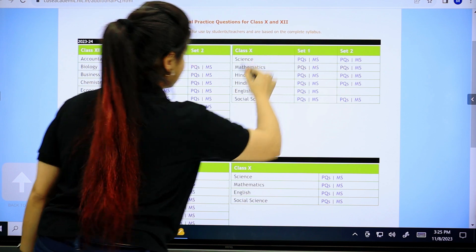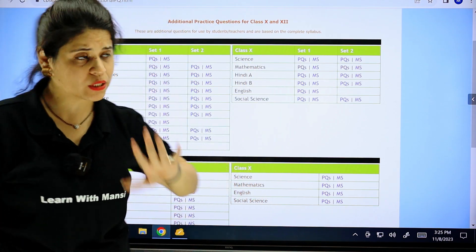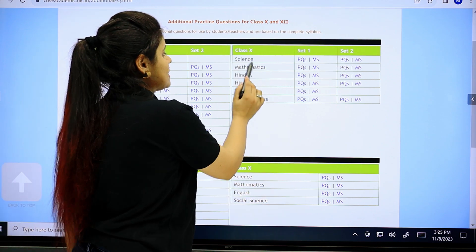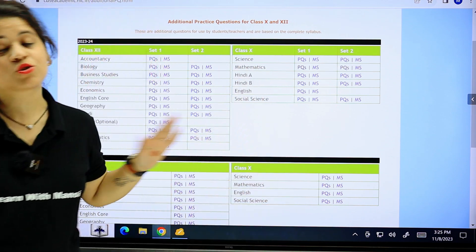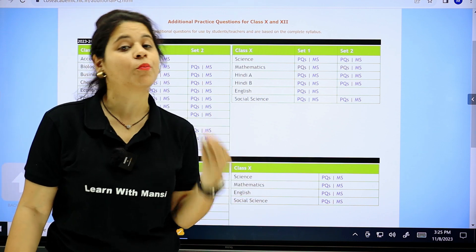There will be two sample papers on each subject. This is our class 10th column. You can see it here. I will also mention it in the description. So science, maths, Hindi A, B, English, Social Science, all of you have two extra sample papers and practice papers.